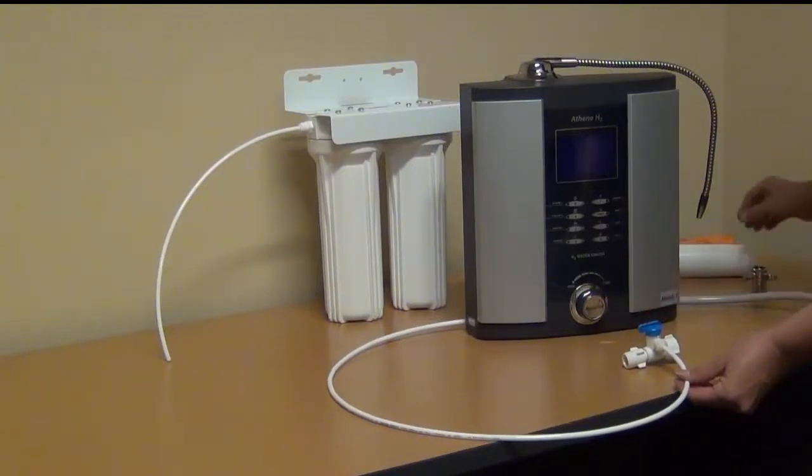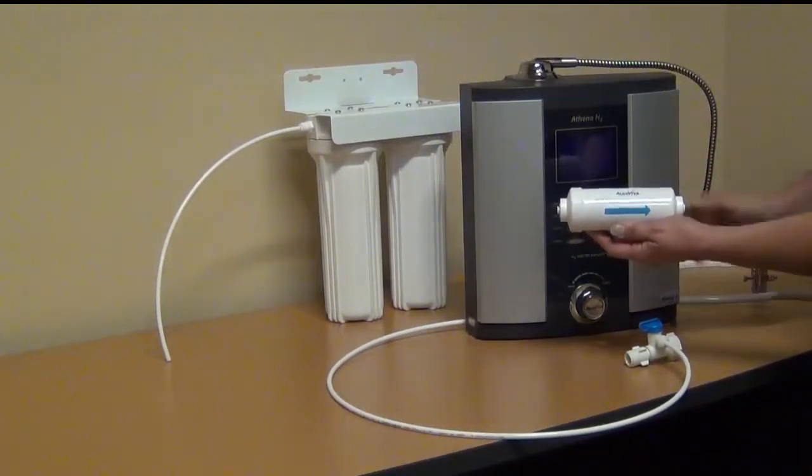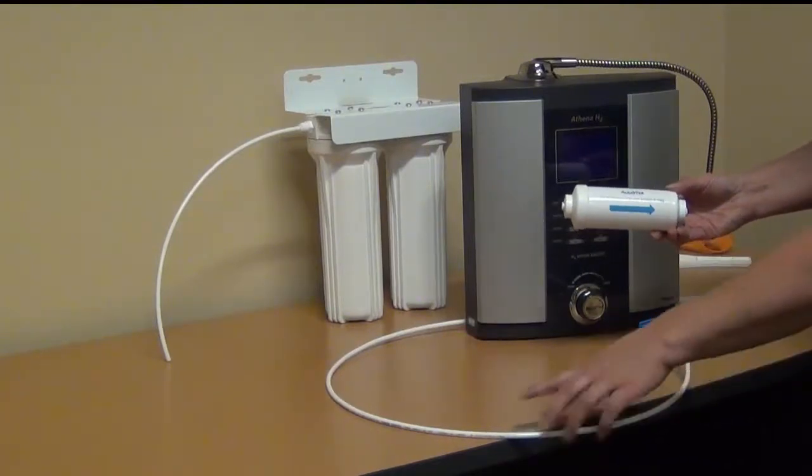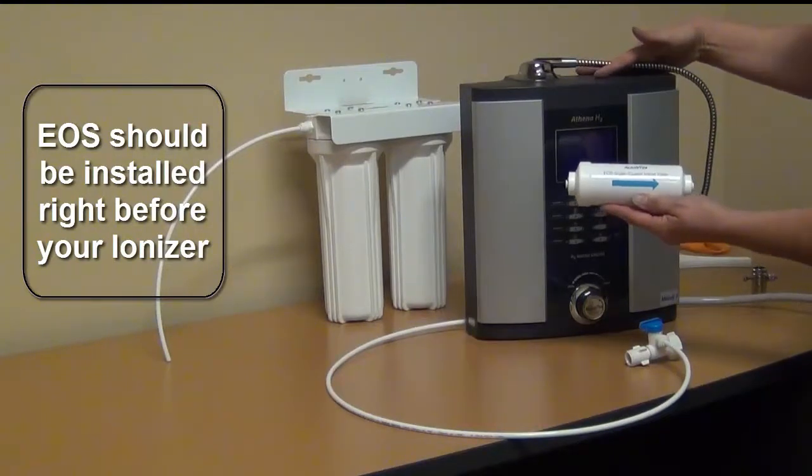The EOS Scale Guard filter will be installed somewhere in this tubing line. It should be installed right before your ionizer.